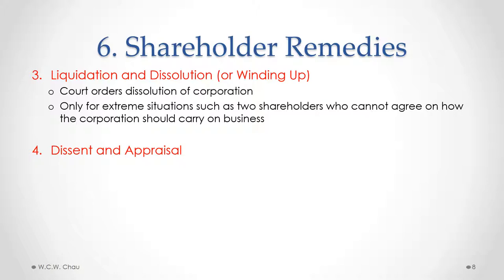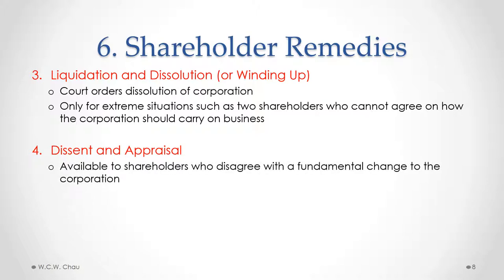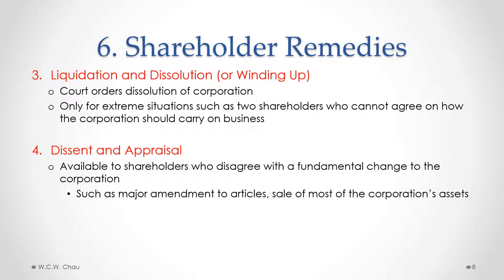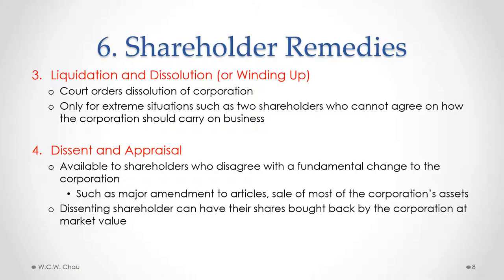The fourth available shareholder remedy is called dissent and appraisal. This remedy is available to shareholders who disagree with a fundamental change to a corporation. A fundamental change could be a major amendment to the articles of the corporation, or a sale of most of the corporation's assets. The dissenting shareholder can ask to have their shares bought back by the corporation at their market value.